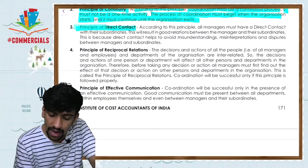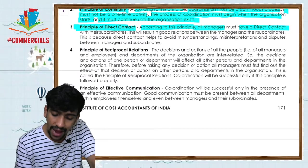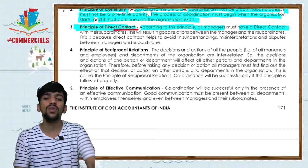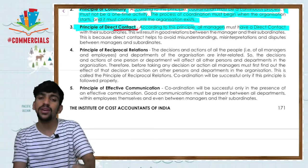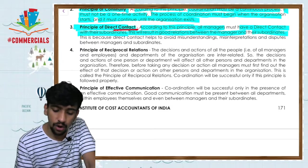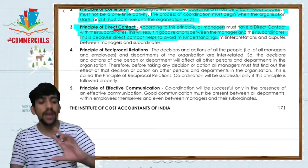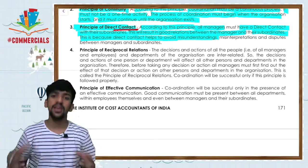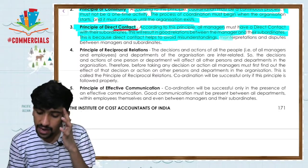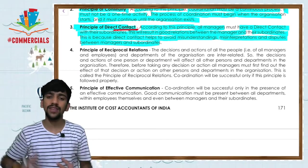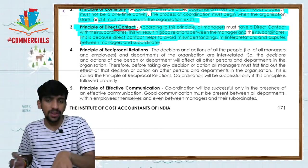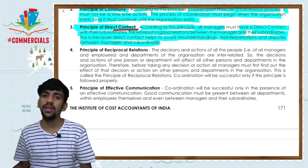The principle of direct contact — according to this principle all managers must have direct contact with their subordinates. This will result in good relationships between managers and subordinates. Direct contact helps avoid misunderstanding, misinterpretation, and disputes. It breaks the negative attitude where managers think subordinates do nothing and subordinates think managers just collect salaries, allowing the organization to function well.